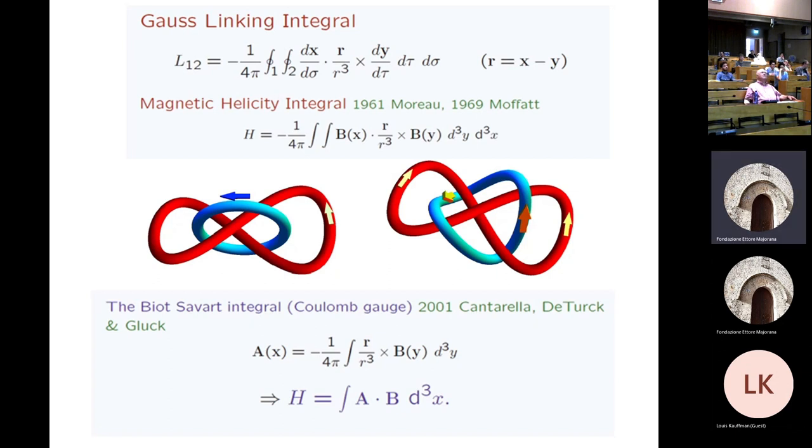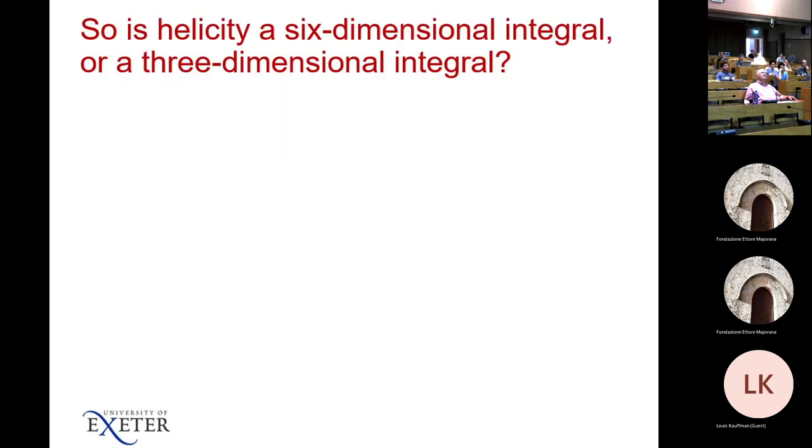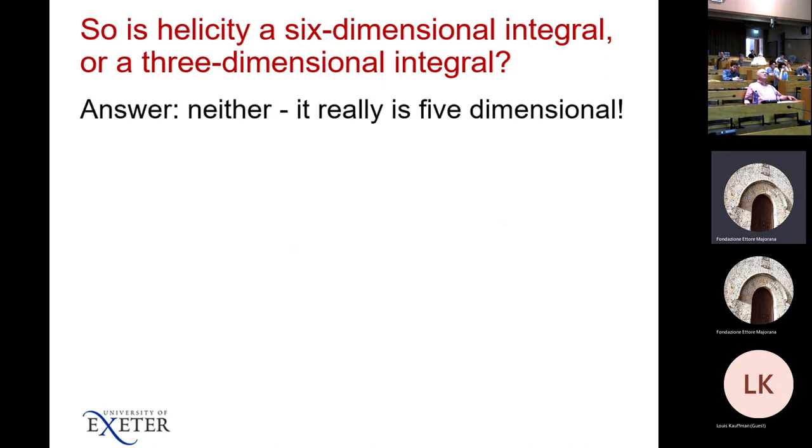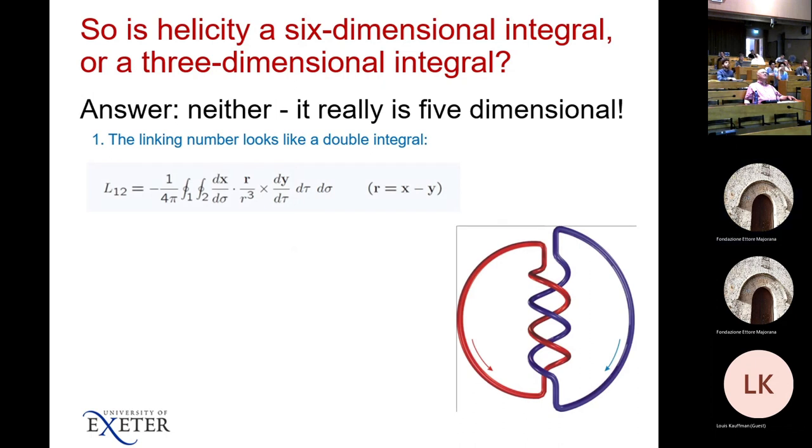But there's a funny thing about this six-dimensional integral. Is it really a six-dimensional integral? It's not three-dimensional because A is a bit dodgy. I'm going to claim it's five-dimensional, and I still think this is weird. So, somebody's going to explain it to me sometime, because here, the linking number looks like a double integral, but remember, you can measure linking using winding.